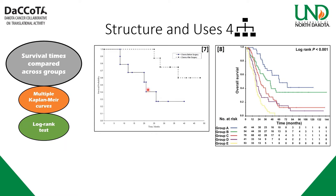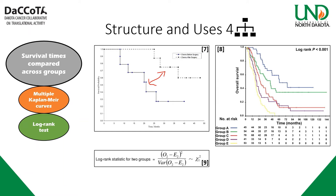If you want to formally test whether there's a statistical difference between groups, we can do the log rank test — the most common one. It's essentially a chi-squared test of observed over expected. For example, in this graph, it gives a p-value with the test statistic and tells you what's significant. There's a significant difference in at least one group here — not surprising given that big spread.